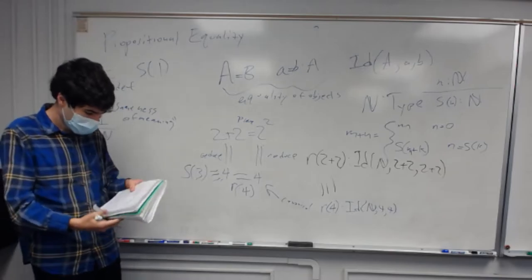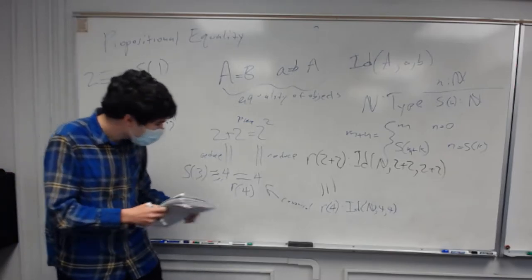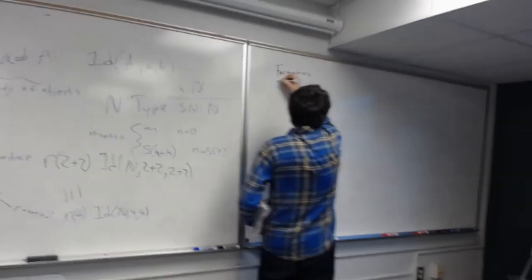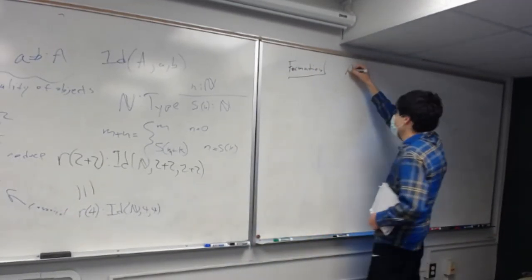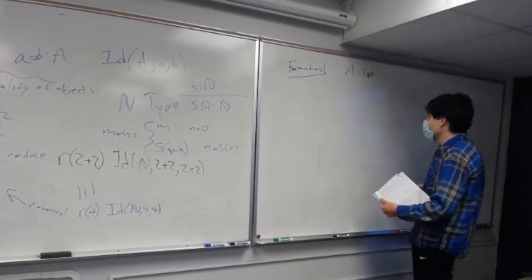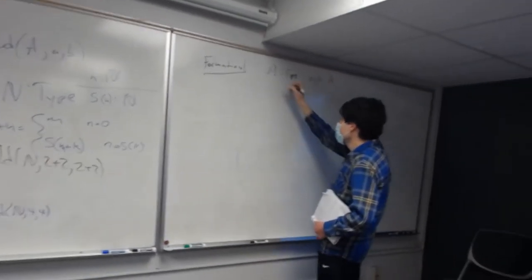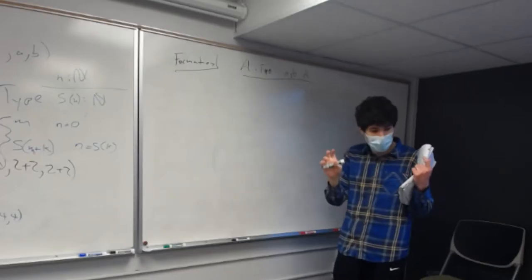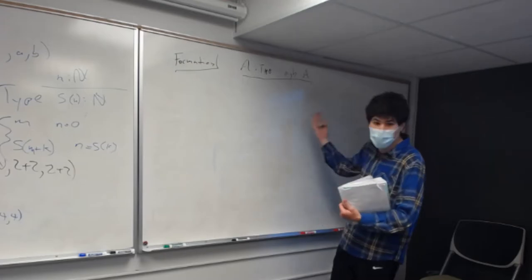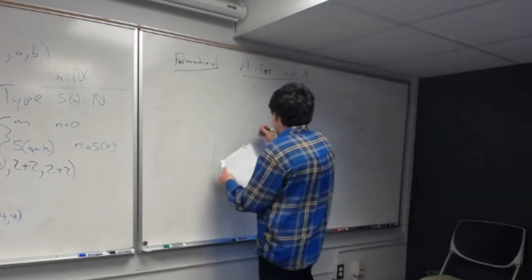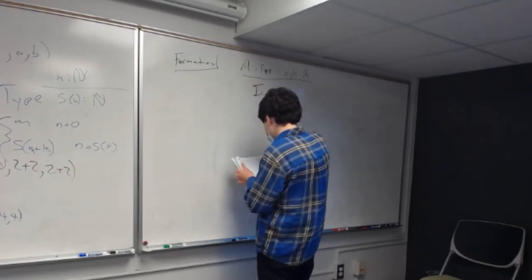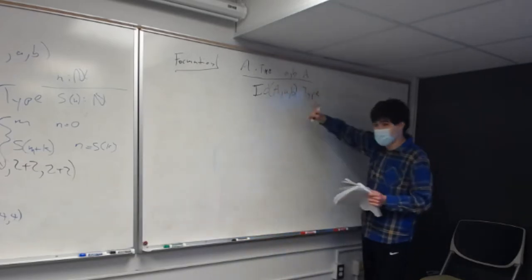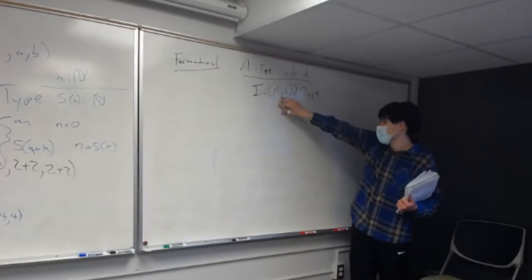Now for the formal rules. Formation is pretty obvious: given type A with terms a and b in A, we can form the identity type I(A, a, b) - that's a well-defined type. A may not be equal to B, but we can still write I(A, a, b).